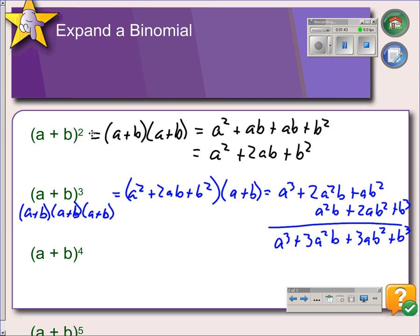Then, if we want to find (a + b)⁴, of course we can take our answer that we got from (a + b)³ and just multiply that by one more (a + b).